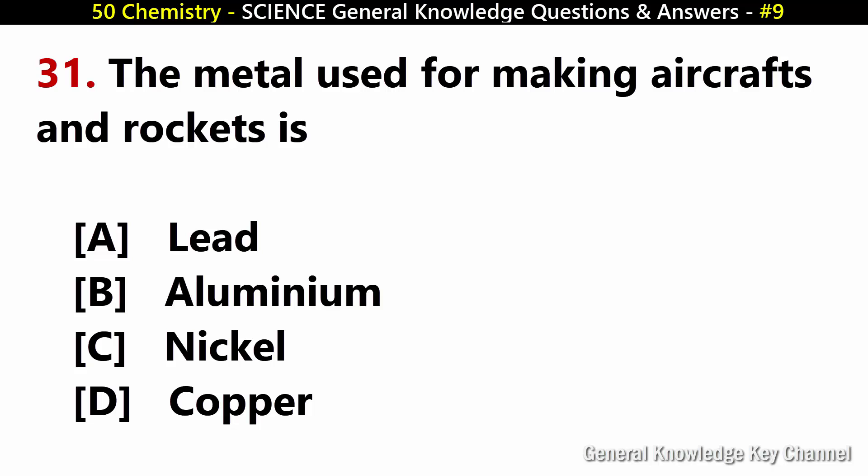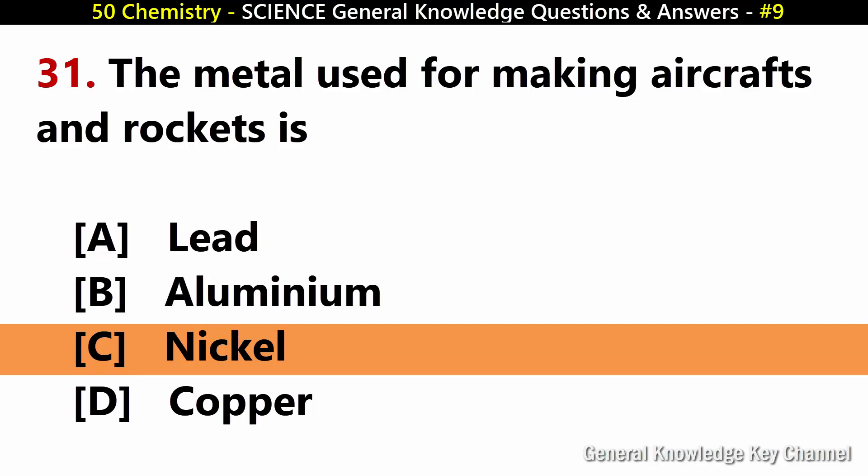The metal used for making aircraft and rockets is? Answer C: Nickel.